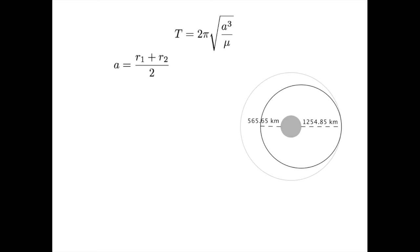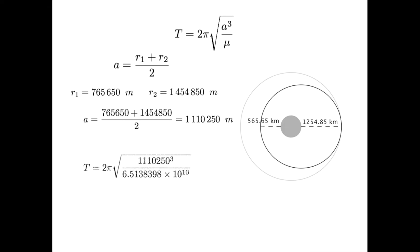That makes r1 and r2 765,650 meters and 1,454,850 meters respectively. That gets a semi-major axis of 1,110,250 meters. Substituting in and pushing through a calculator gets 28,800 seconds or 8 hours.